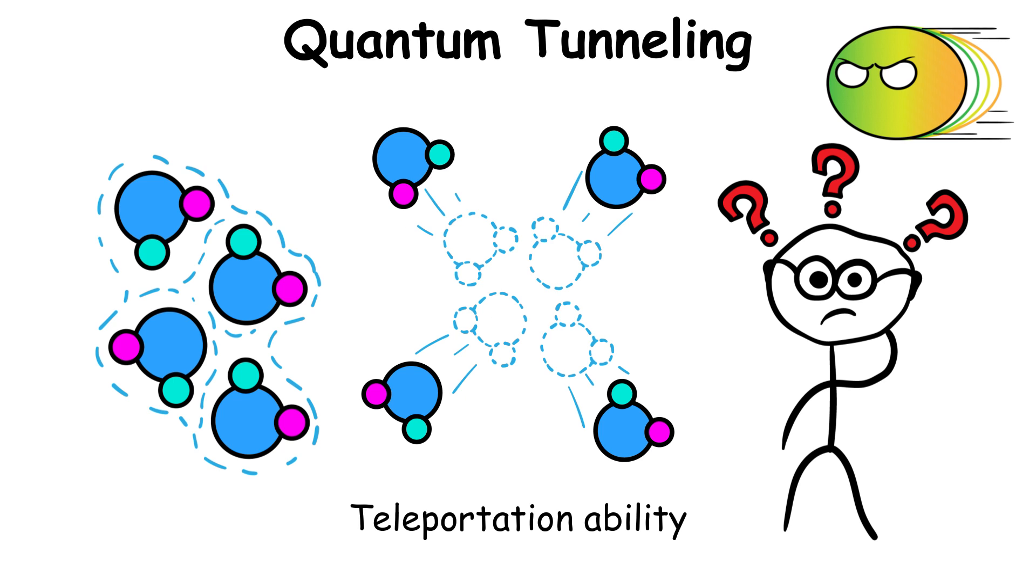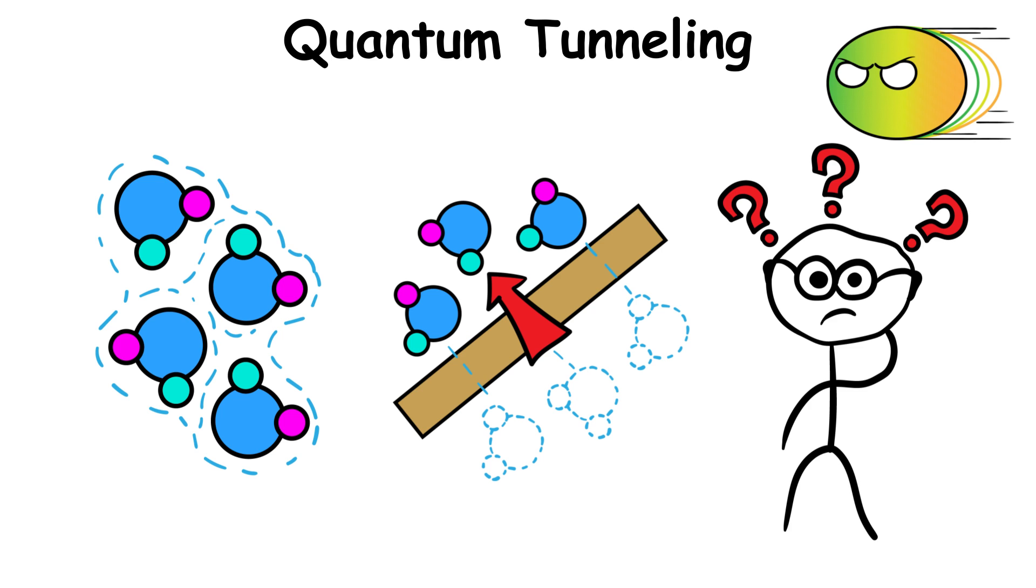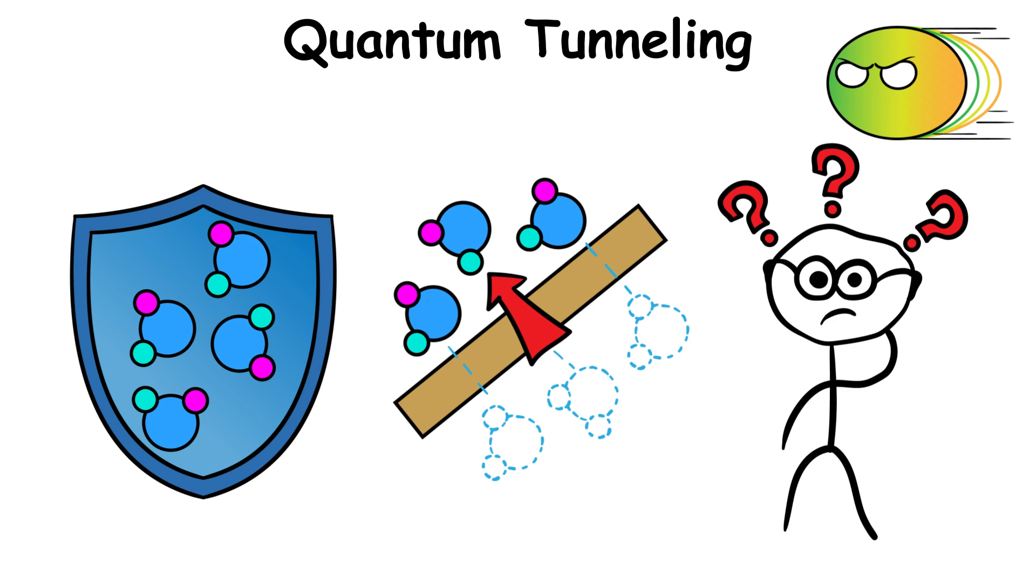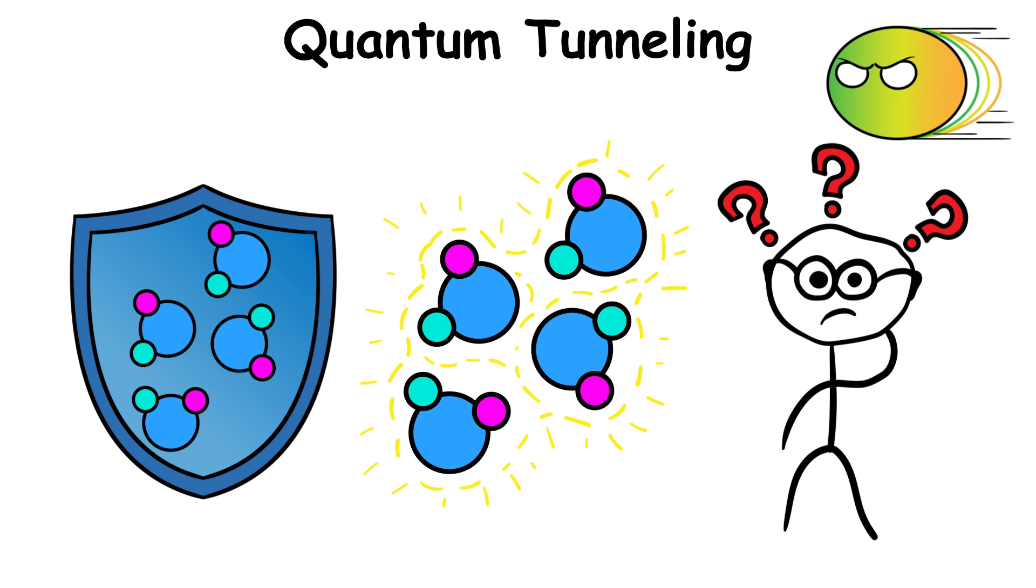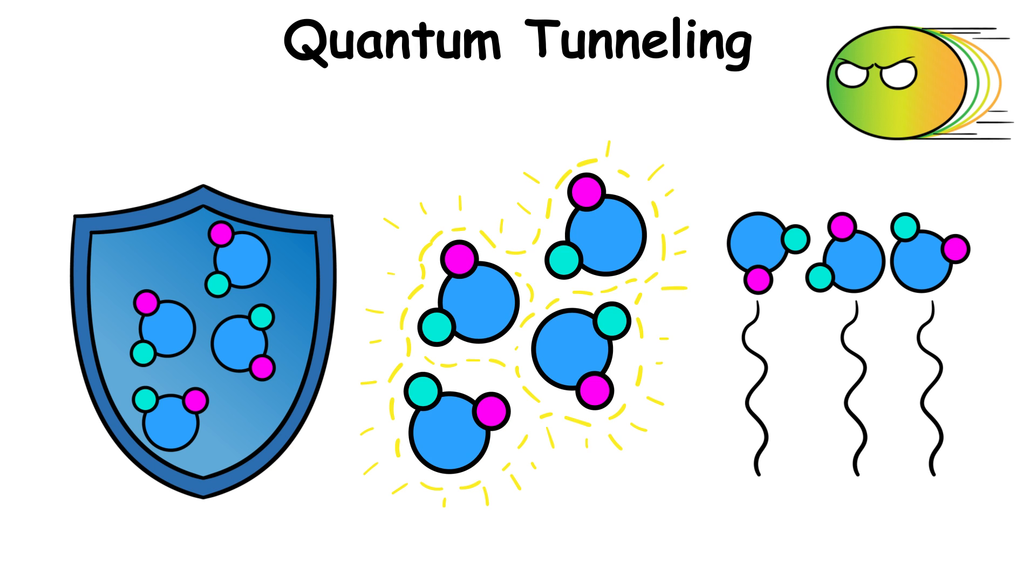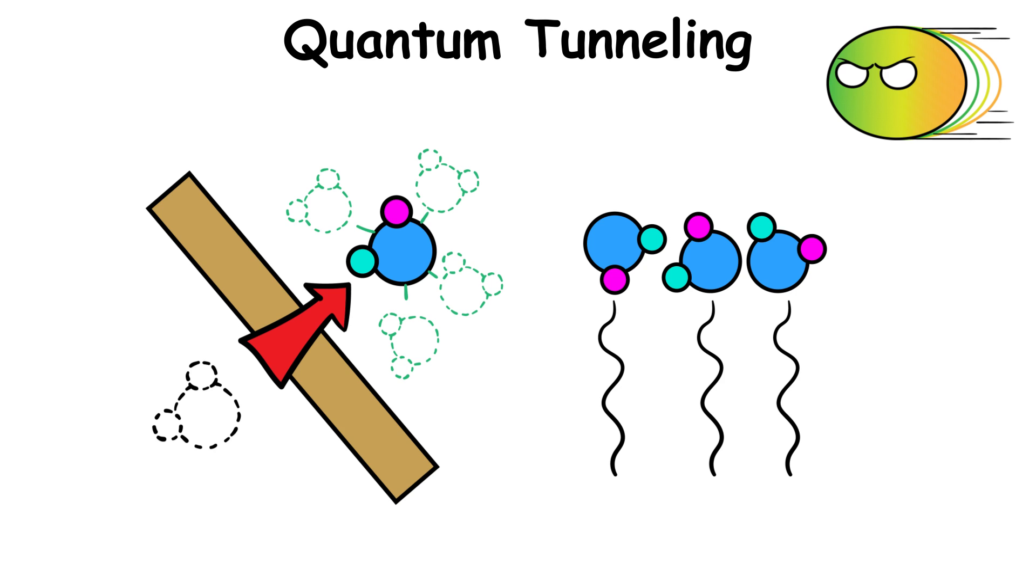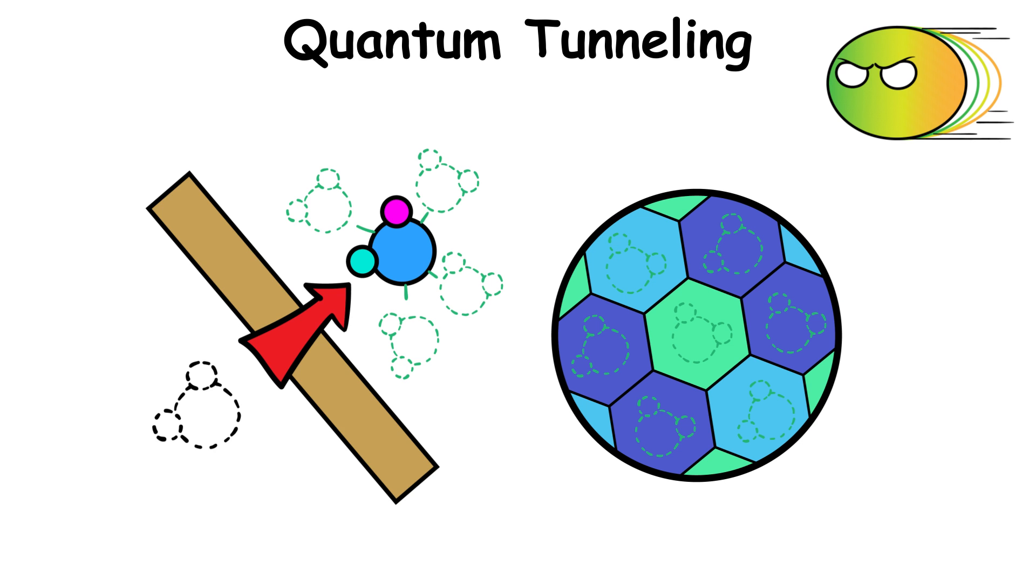But the quantum world tells us that these particles have a unique teleportation ability to do what seems impossible. The universe says, hey, I'll give these particles the ability to sneak through walls, even though you thought they were impenetrable. But this is not because of a mystical ability. Instead, it's due to the wave-like nature of particles, which allows them to simultaneously exist on the other side of an impenetrable barrier.